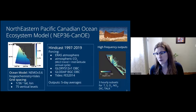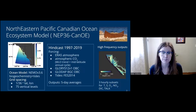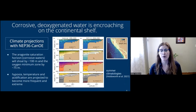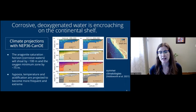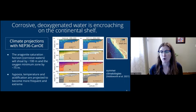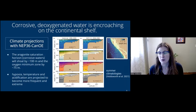We have tides from FES2014, using tidal loading and attraction. We have five-day average outputs and also three-hourly high-frequency outputs for a subset region, including temperature, salinity, oxygen, nitrates, DIC, and total alkalinity. One of the real motivating factors for this work comes from previous climate impacts research comparing a historical period from 1986 to 2005 and a future period from 2046 to 2065 under two different climate scenarios.